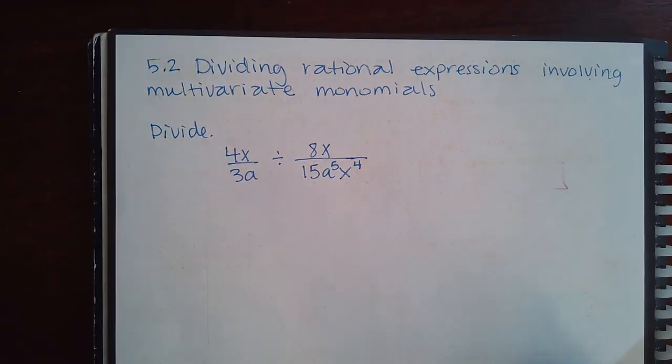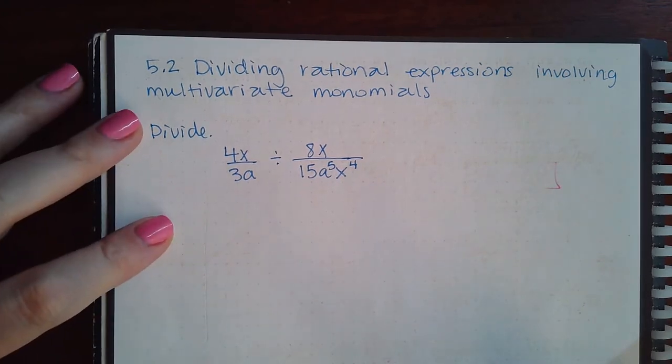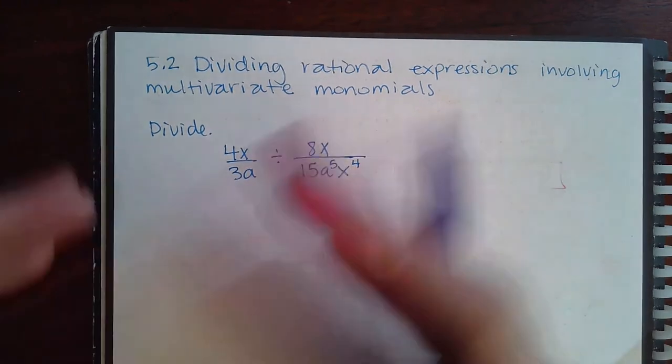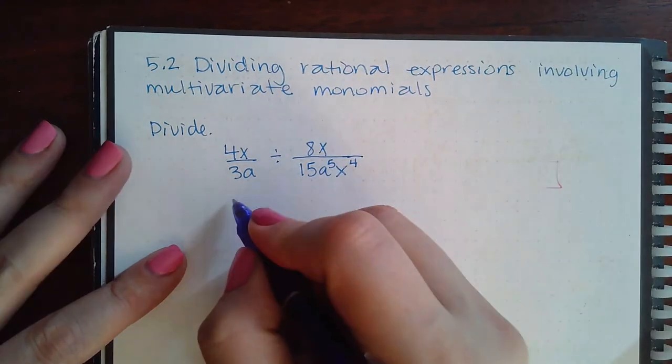Here we're doing 5.2 dividing rational expressions involving multivariate monomials. The trick with division is these are fractions, so we're going to use the same concepts as we do when we divide fractions.